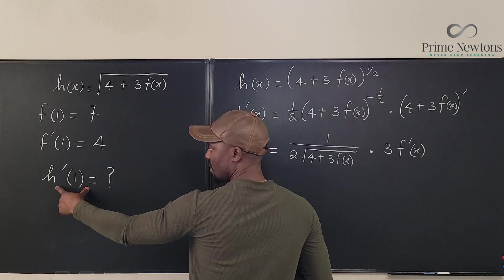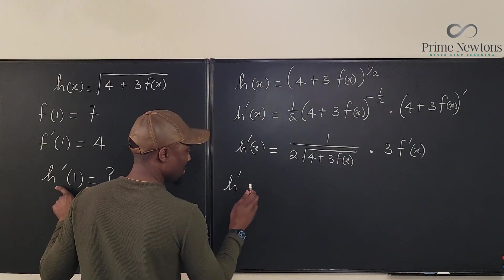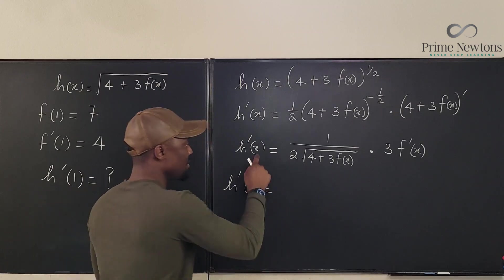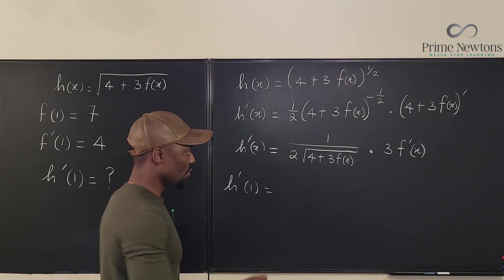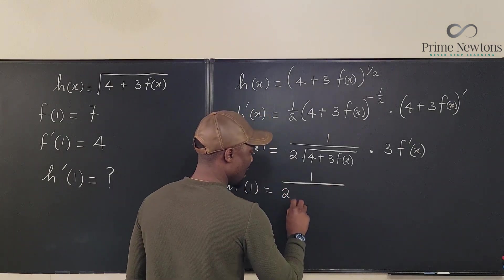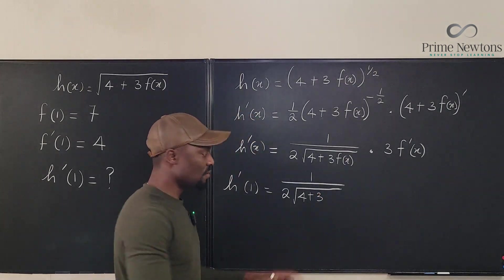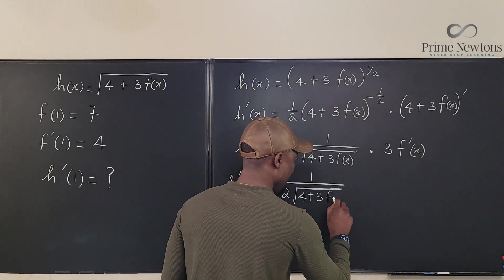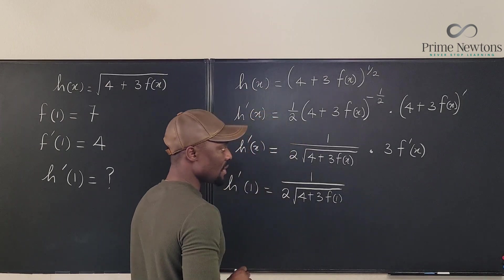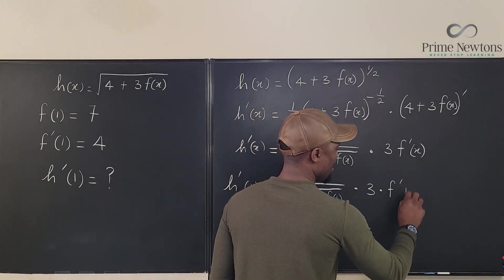So we go to the question. h prime evaluated at 1 means anywhere you see x plug in 1. So this is what we have. There's going to be 1 over 2 times the square root of 4 plus 3 times f(1). It's going to be f(1), multiplied by 3 times f prime of 1.